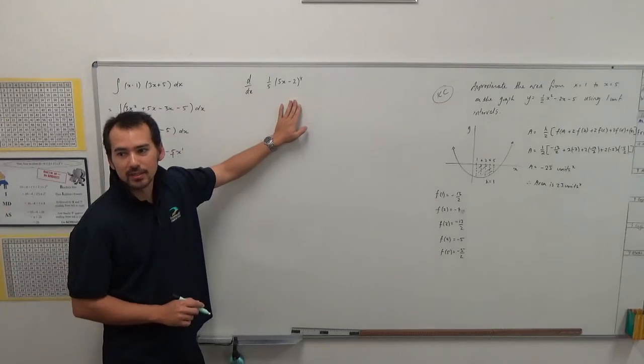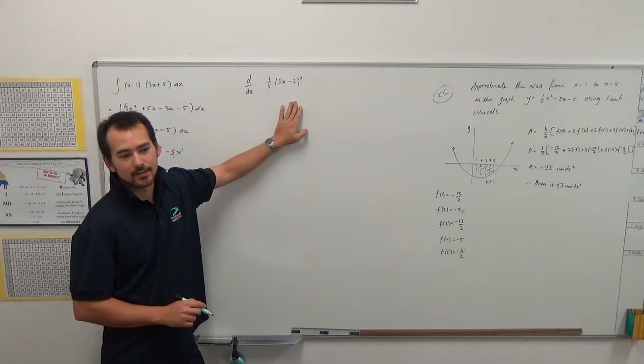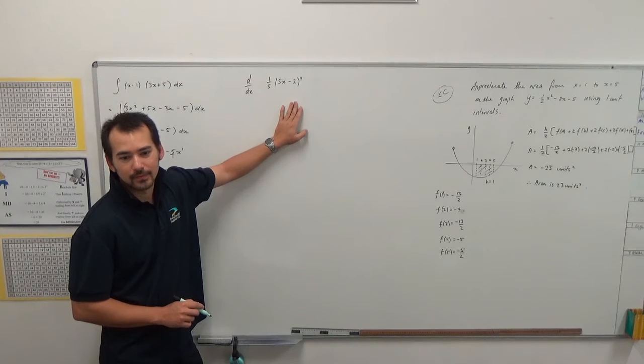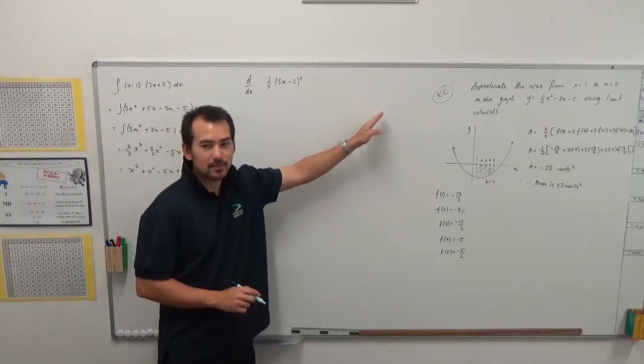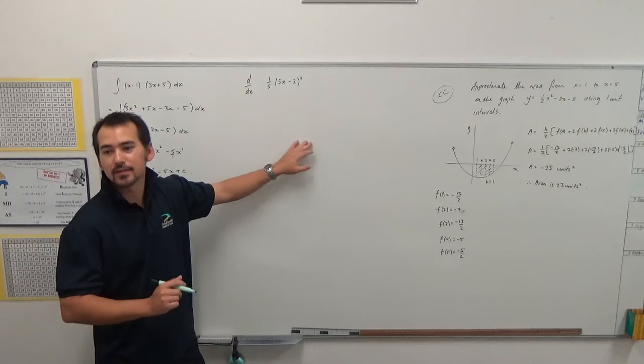So, deriving this using the chain rule, can you remember what happened? Expand? No, we don't expand, we don't want to expand this four times, that would be a lot of work. There's a quicker way to do this.